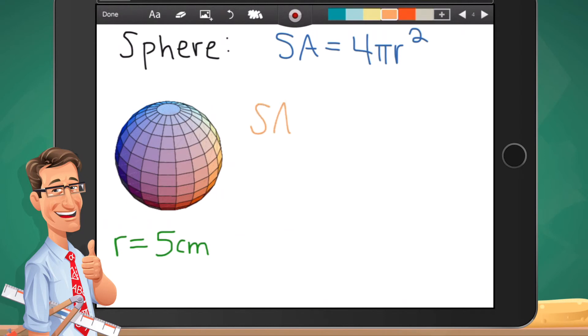So the surface area is 4 times pi, 3.14, times your radius, I'm telling you is 5 squared. Again, type it in your calculator and you should get the answer you're looking for, which ends up being 314 centimeters squared.